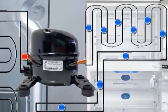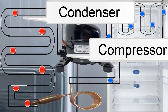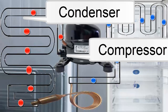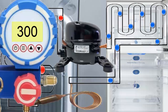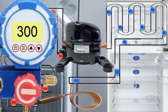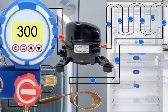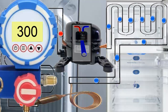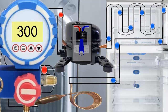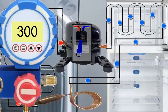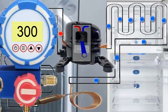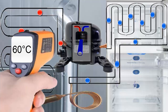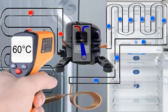The pressure and temperature of the R404A refrigerant increase considerably in the compressor. The pressure of the R404A at the compressor outlet reaches a value close to 300 pounds per square inch. The temperature of the R404A at the compressor outlet can be around 60 degrees Celsius.